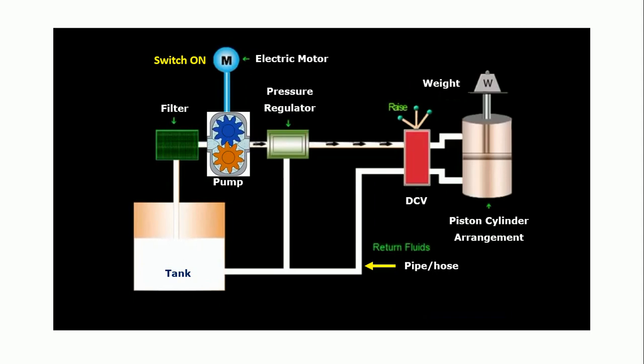Then at the direction control valve, we will be able to control the direction of fluid flow, whether in counterclockwise direction or in clockwise direction. When the fluid flow is in counterclockwise direction, fluid enters the lower portion of the cylinder and it will lift the piston in upward direction, which is known as forward stroke or extension stroke of the cylinder.